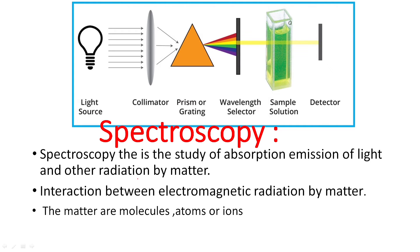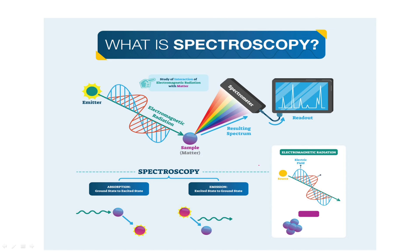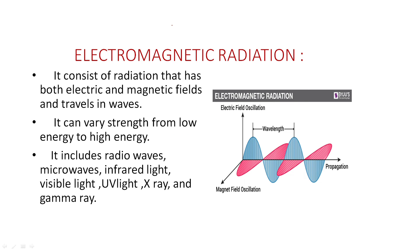Spectroscopy is the study of absorption and emission of light and other radiation by matter. A light source interacts with a sample at a specific wavelength, and a detector measures the result. Electromagnetic radiation has both an electrical field and a magnetic field — it travels as a wave. There are two types of interactions: absorption and emission.